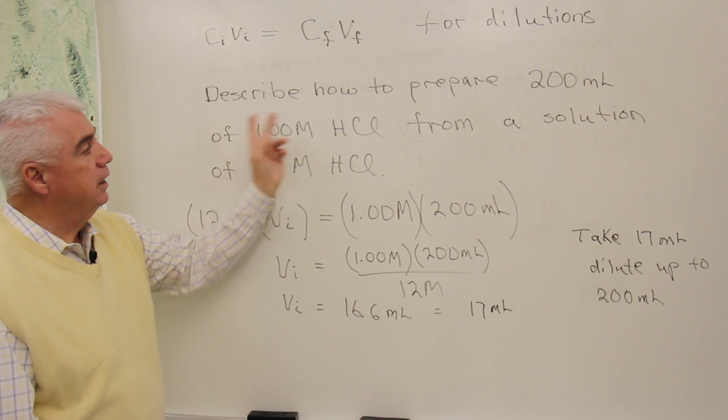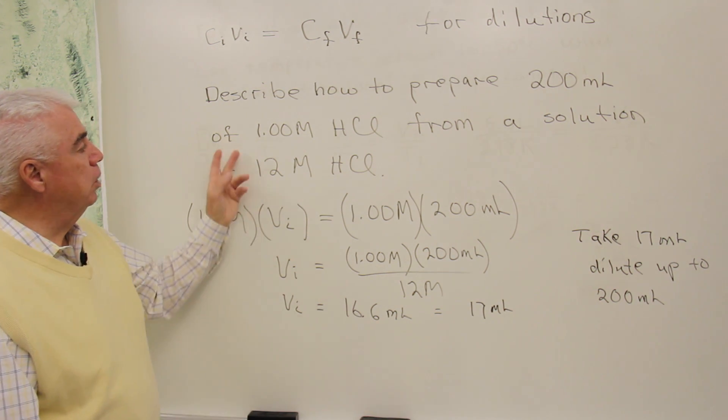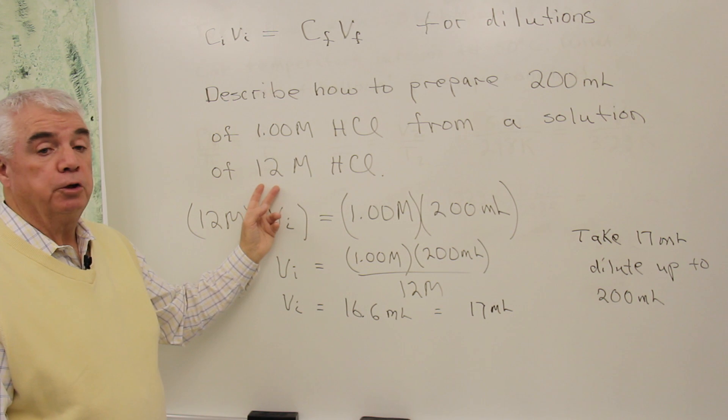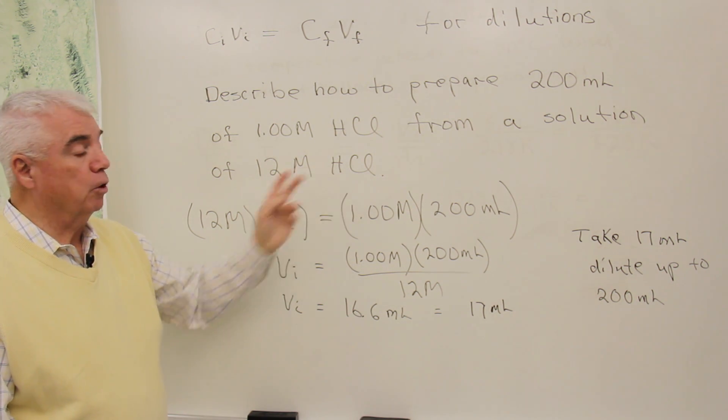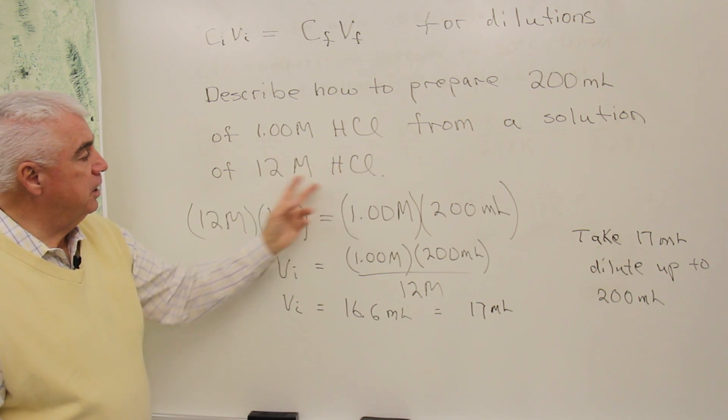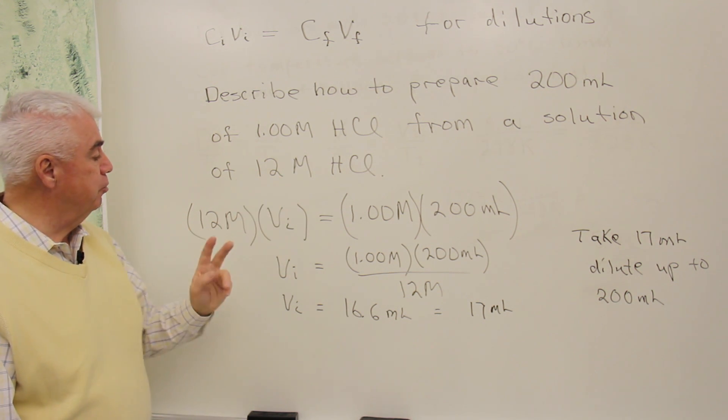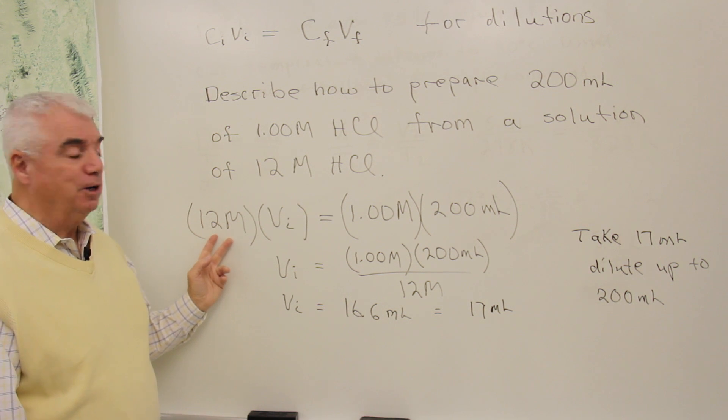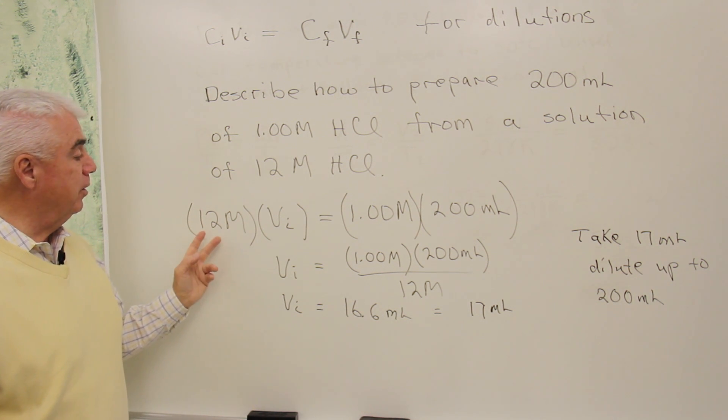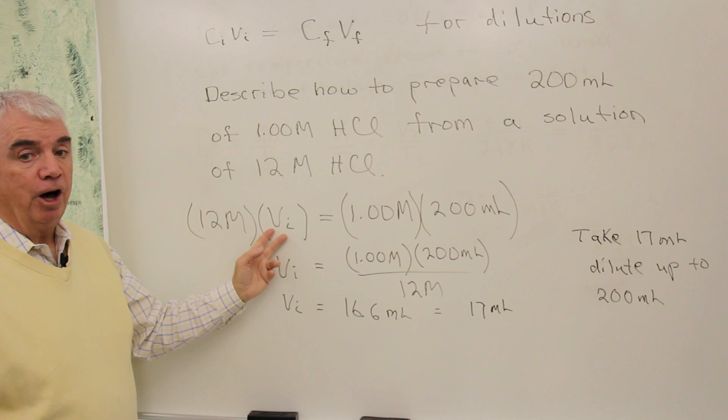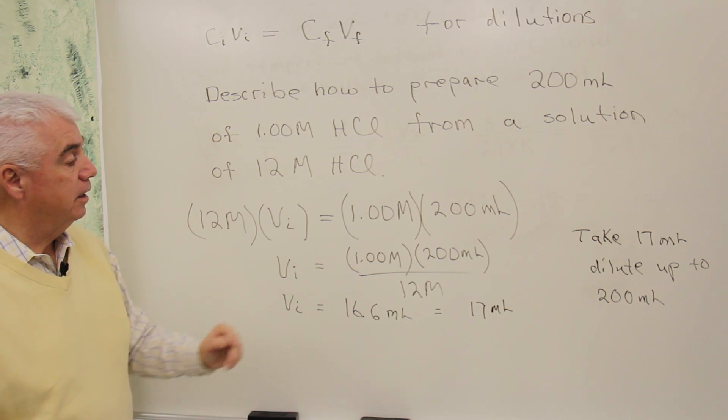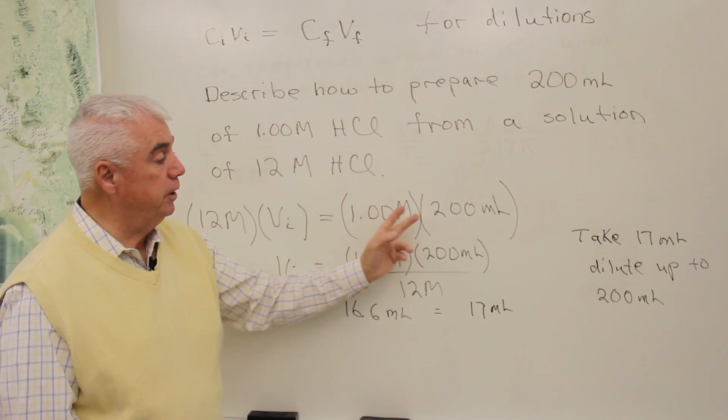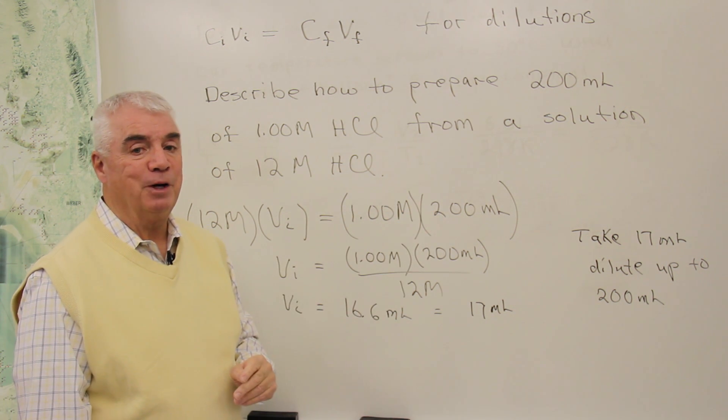Here's a typical problem. Describe how to prepare 200 milliliters of a 1 molar hydrochloric acid solution from a solution of 12 molar hydrochloric acid. Well, let's let this 12 molar be our initial concentration. And we're simply going to substitute into the formula. The formula is our roadmap for working the problem. And this initial volume, we need to solve for that. And we're going to make a solution, which is 1 molar in concentration, and we need 200 milliliters of it.